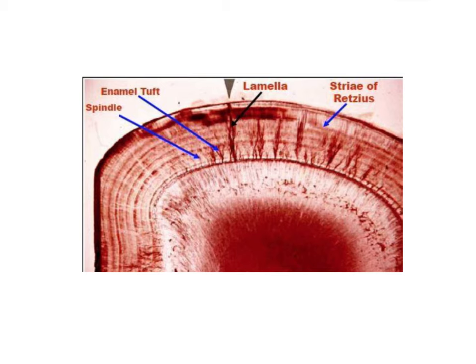When you look at a ground section under the microscope, you will see few more structures. One of them is enamel spindle. What is this enamel spindle? At the dentinoenamel junction, the odontoblasts and ameloblasts meet and start secreting their respective tissues. At the DEJ, your odontoblasts secrete the dentin ultimately in the form of an odontoblastic process.